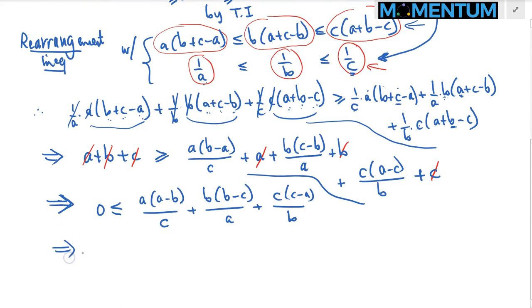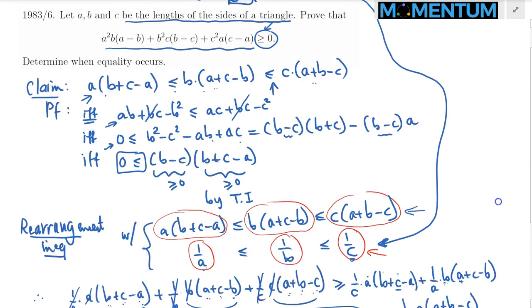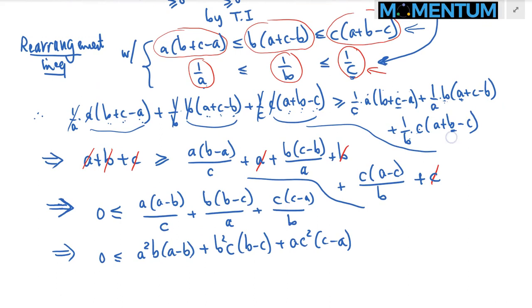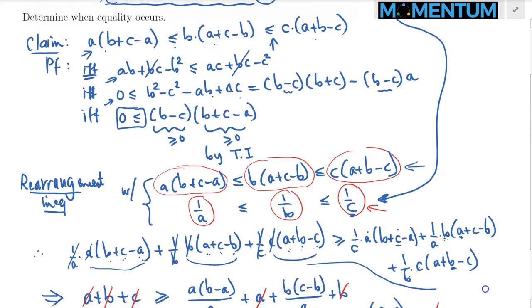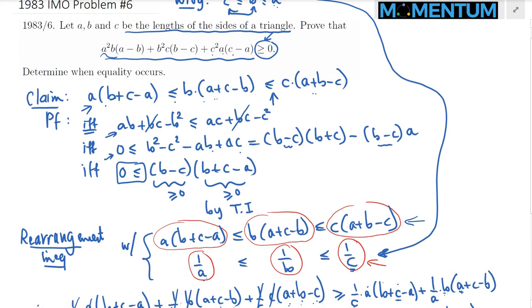We multiply both sides by ABC, which is positive. The C's cancel in the first term, A's cancel in the second, and B's cancel in the third, giving: 0 ≤ A²B(A−B) + B²C(B−C) + AC²(C−A). Checking against our target expression — A²B(A−B) + B²C(B−C) + AC²(C−A) — yes, that matches, and we have just shown this is ≥ 0.